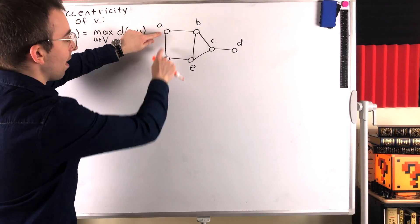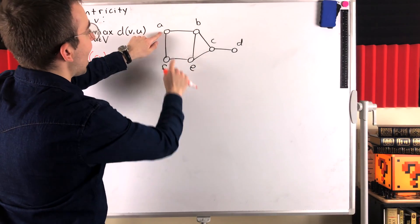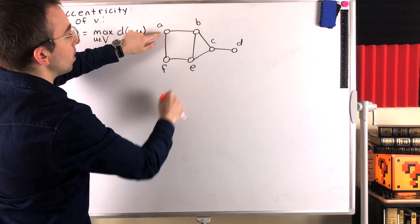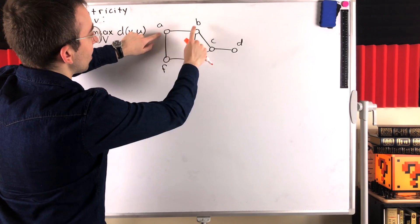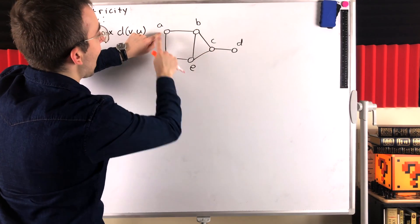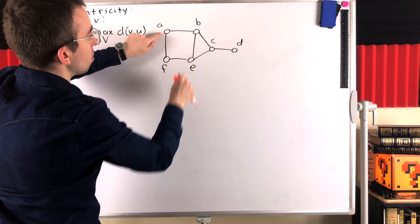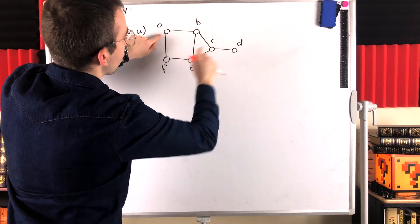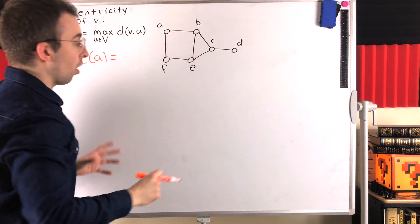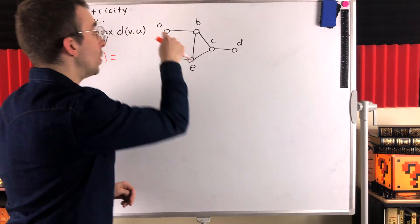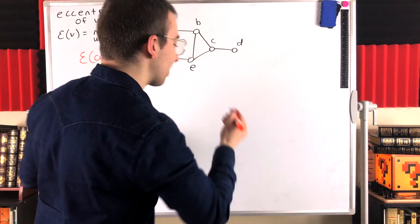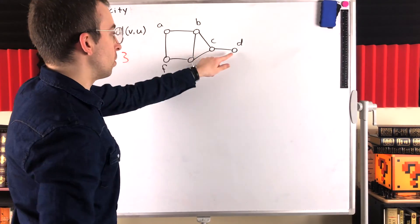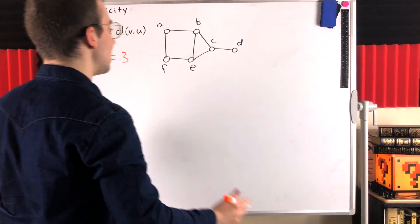The distance between a and f is one. The distance between a and b is also one. The distance between a and e is two. The distance between a and c is also two. And the distance between a and d is three. So the greatest distance between a and any other vertex in the graph is three — that was the distance between a and the vertex d.